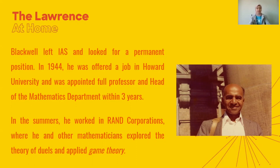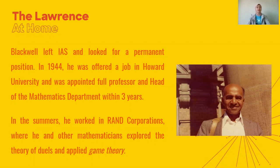Because he was treated this way, Blackwell was not able to do his research as well as possible at IAS, so he decided to leave. In 1944, he was offered a job at Howard University and was appointed full professor and head of the mathematics department within three years. While working at Howard University, he also worked at the RAND Corporation in the summers, where he and other mathematicians explored the theory of duels and applied game theory.